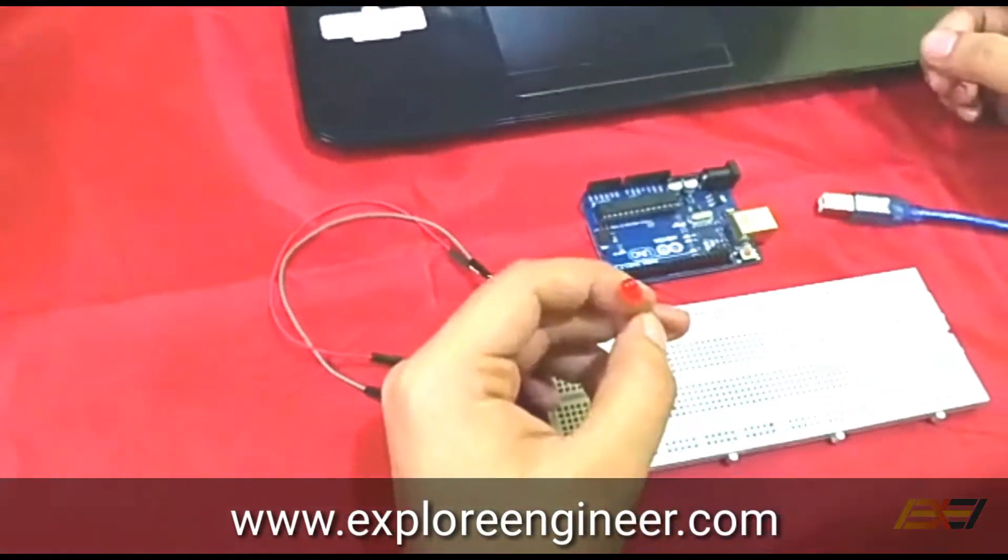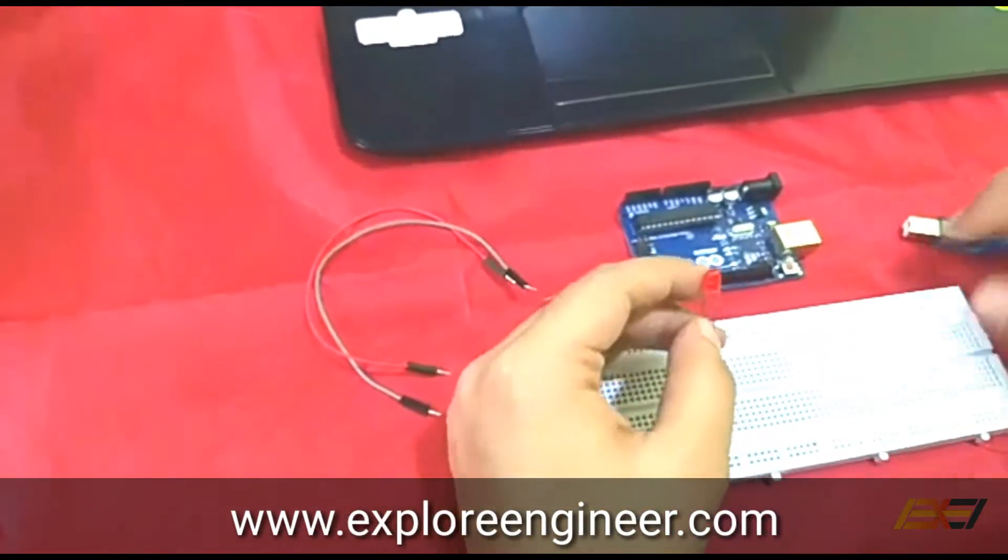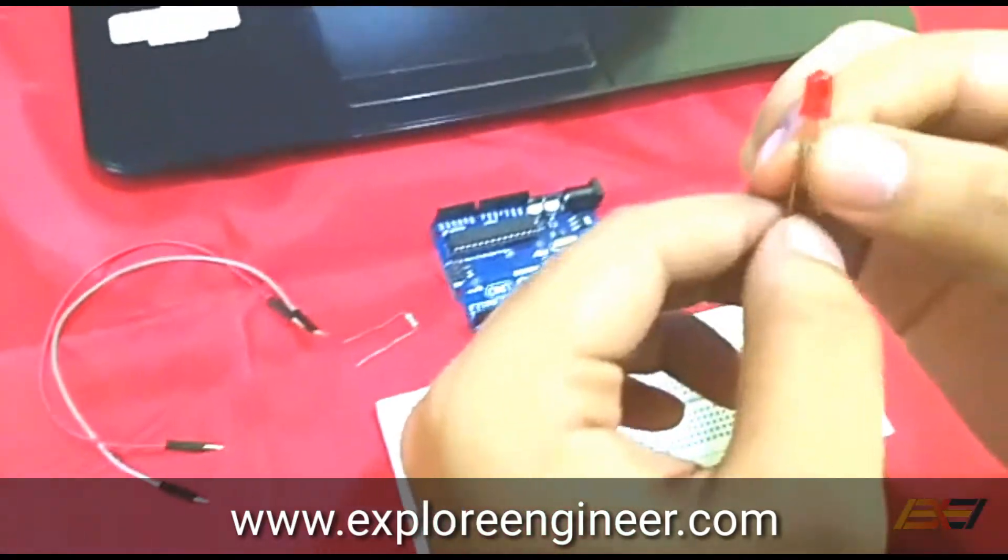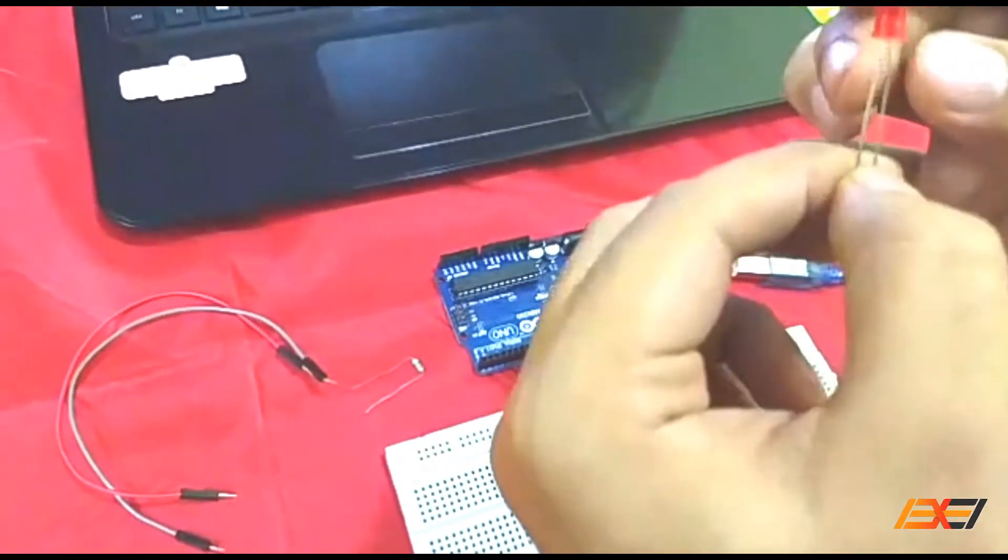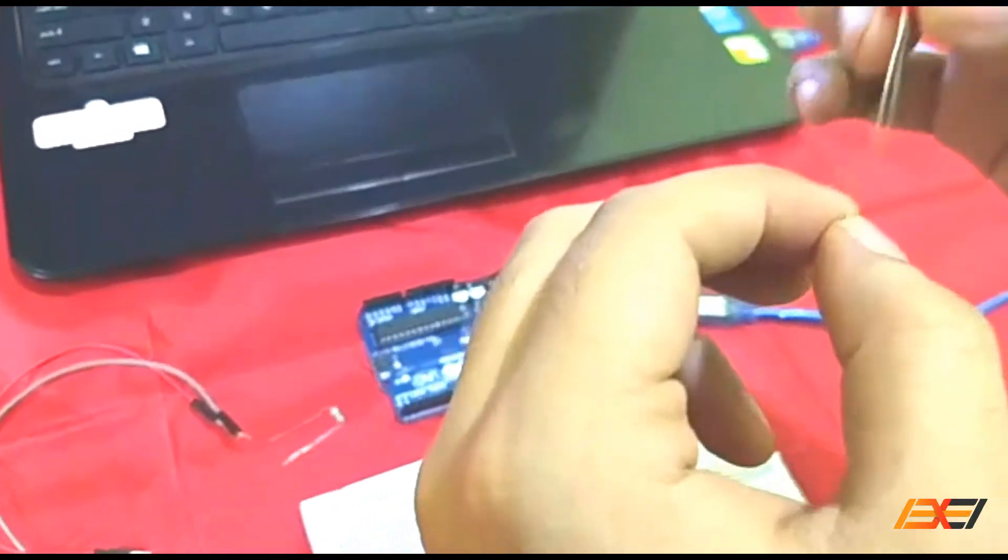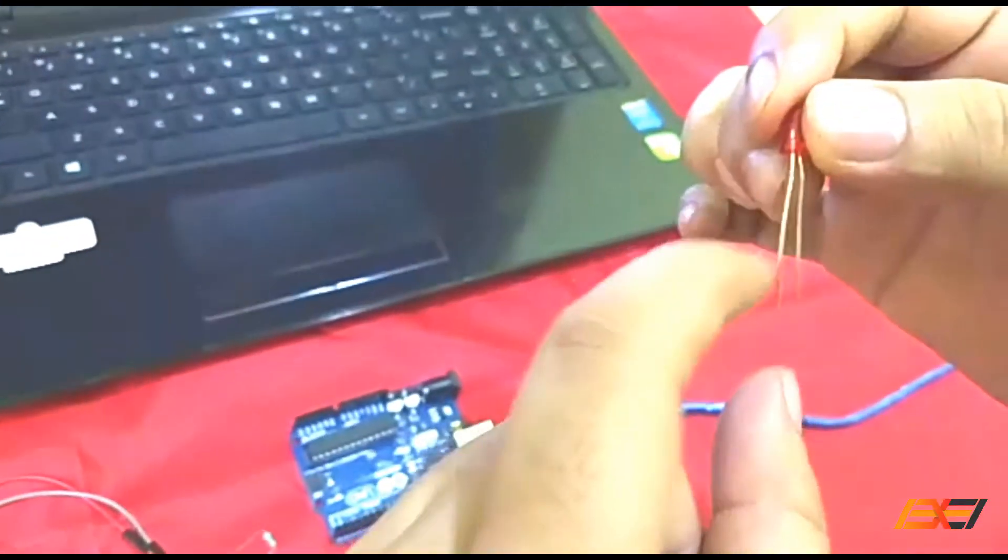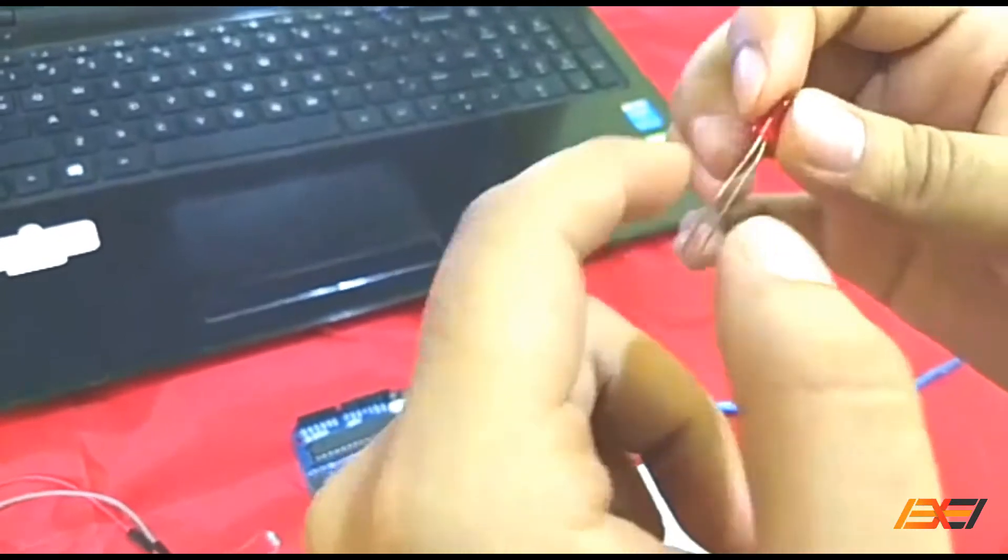First, we are going to identify the positive and negative parts of this LED. The long part is positive and the short is negative, which are called anode and cathode, respectively.